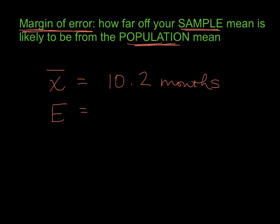That's telling me how far off my sample mean might be from the population. So the way you get your confidence interval is you start with your mean of 10.2 and your error is as much as 1.2. That means you might be 1.2 months too high or you might be 1.2 months too low.